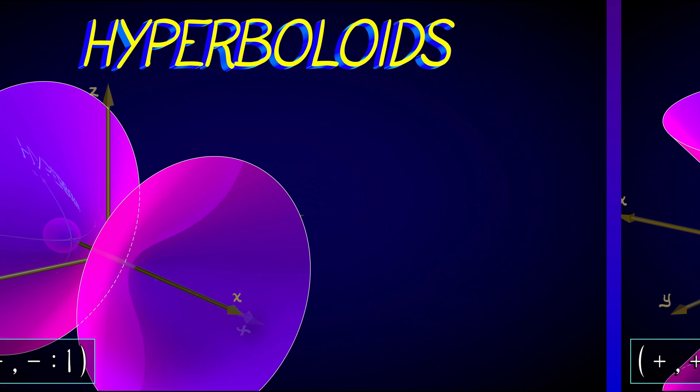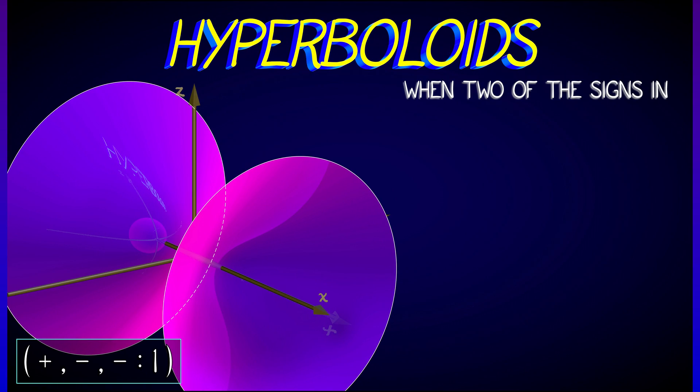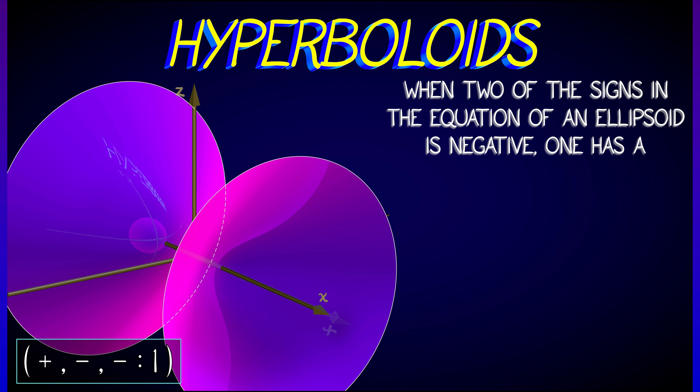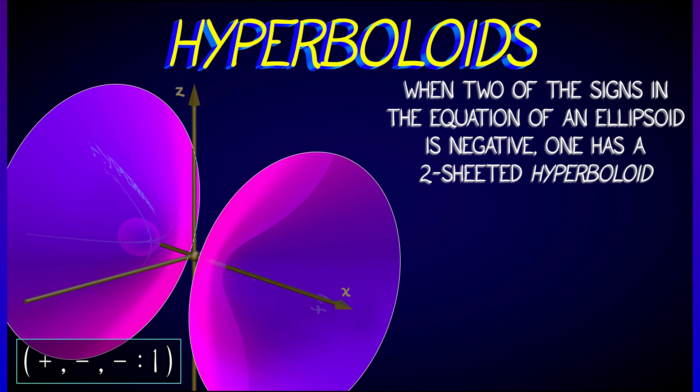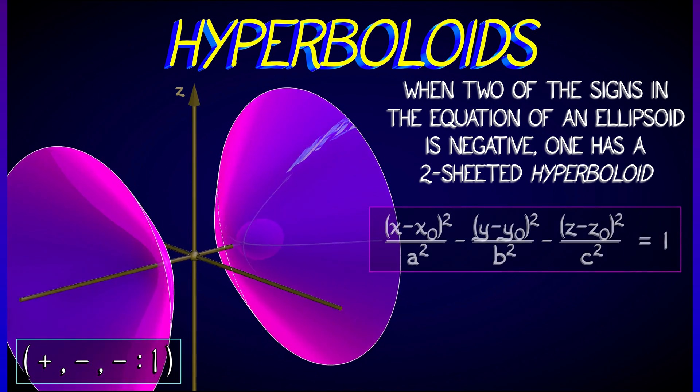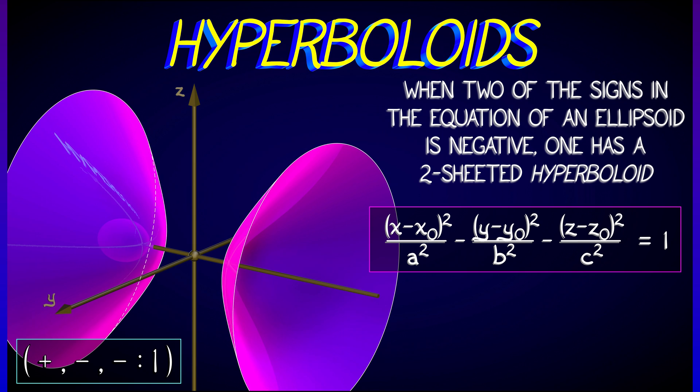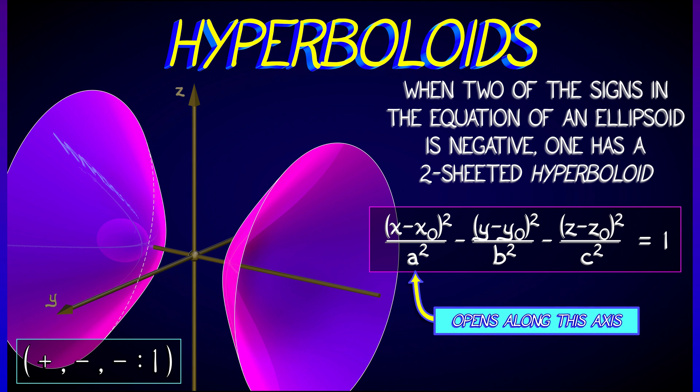Next up we move from a one-sheeted hyperboloid to something called a two-sheeted hyperboloid. This is actually a disconnected surface and it is obtained by having two negative signs in that equation that we have been working with. In this case, the one quadratic term left that is positive tells you the axis along which the two-sheeted hyperboloid opens. Both types of hyperboloids are common and they're really interesting surfaces.